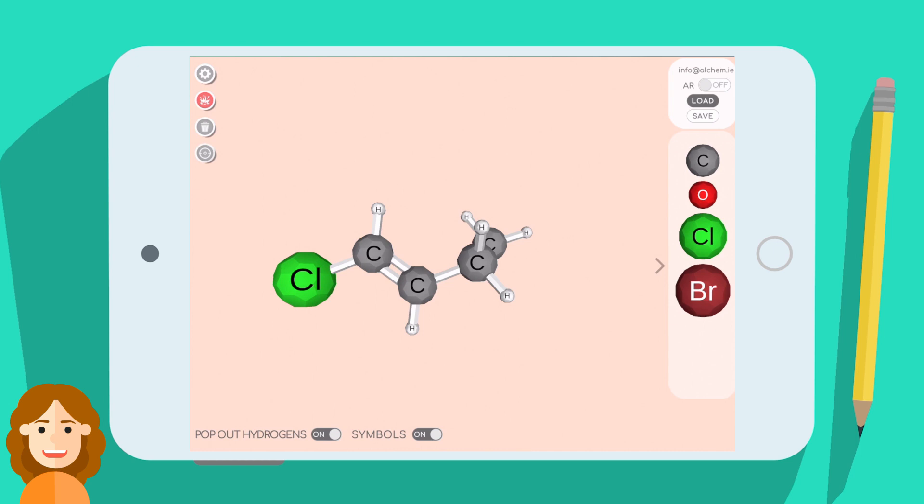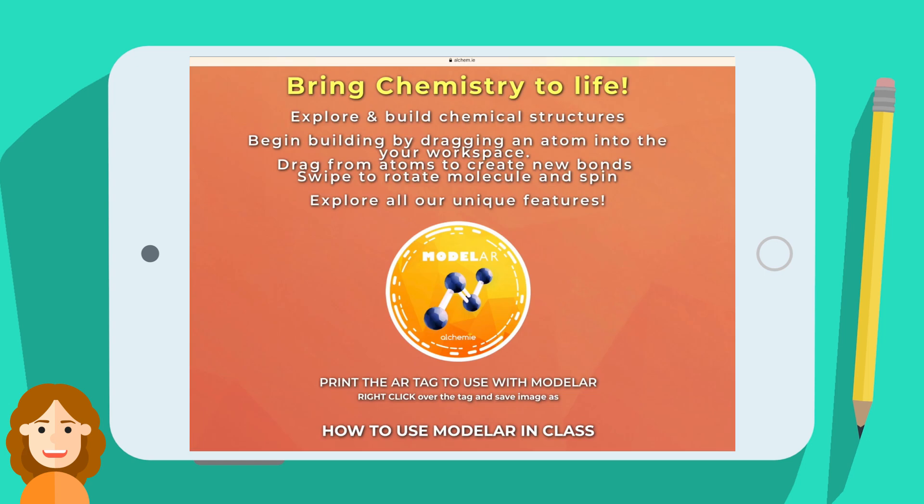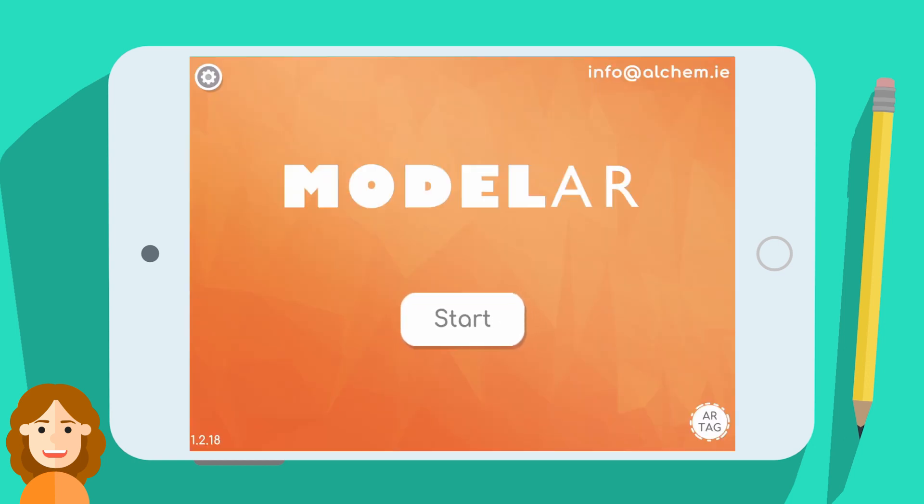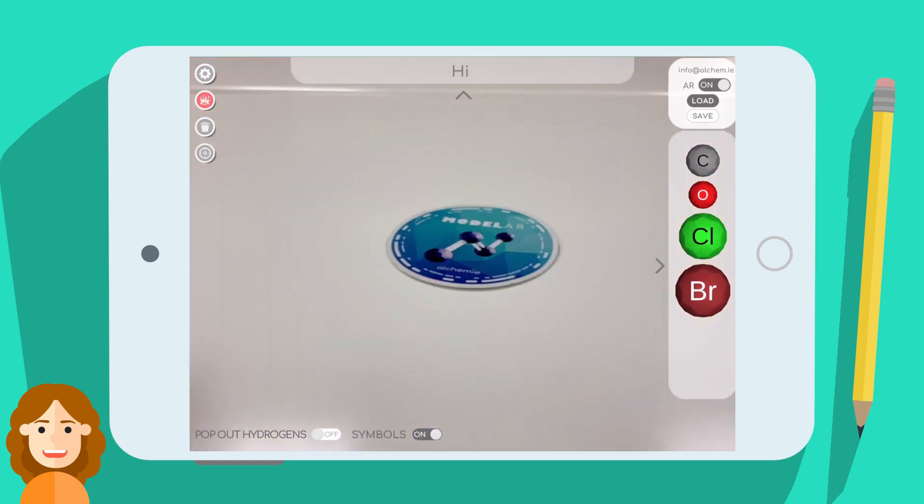Lastly, let's talk about the augmented reality feature. First, you will need an AR tag, which you can download and print from our website, alchem.ie/modeler/game, or by tapping on the AR tag button on the home screen. Once you have the tag, turn on AR and point your camera at the tag.